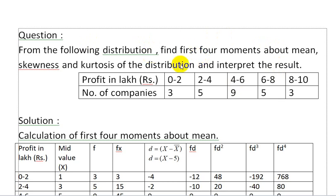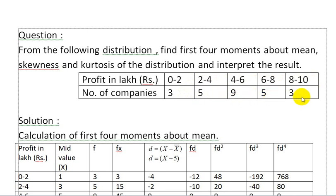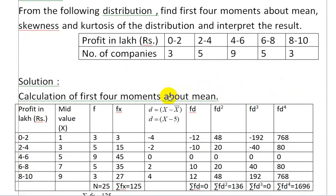From the frequency distribution, find the first four moments about the mean. Also find the skewness and kurtosis of the distribution and interpret the result. The data given is: Profit in lakh rupees with corresponding number of companies, with total number of companies being 35 and profit values given.